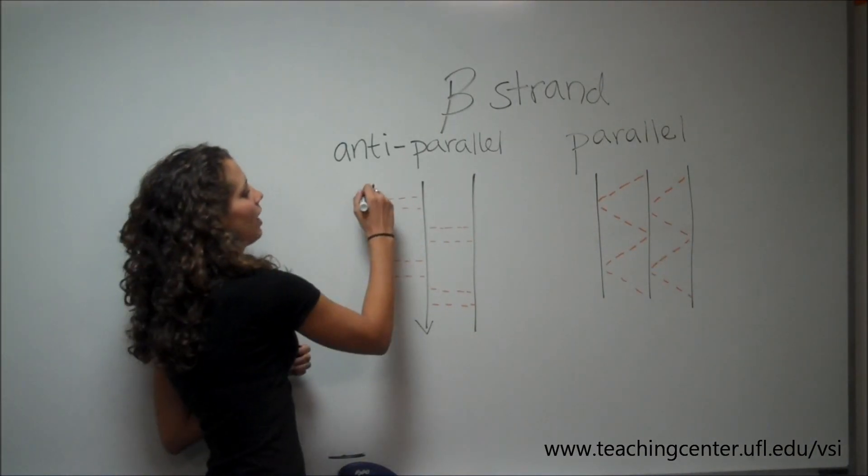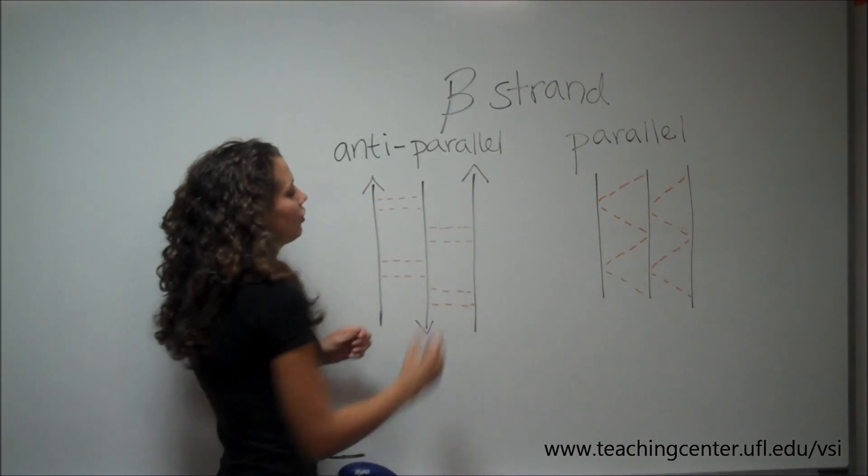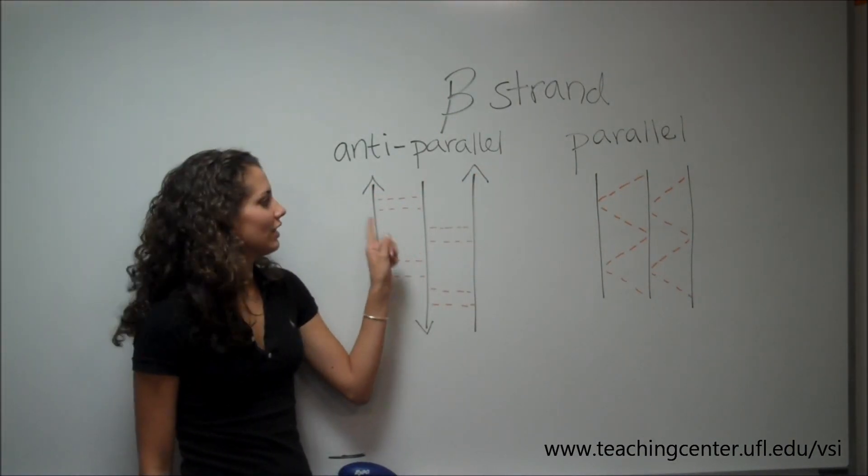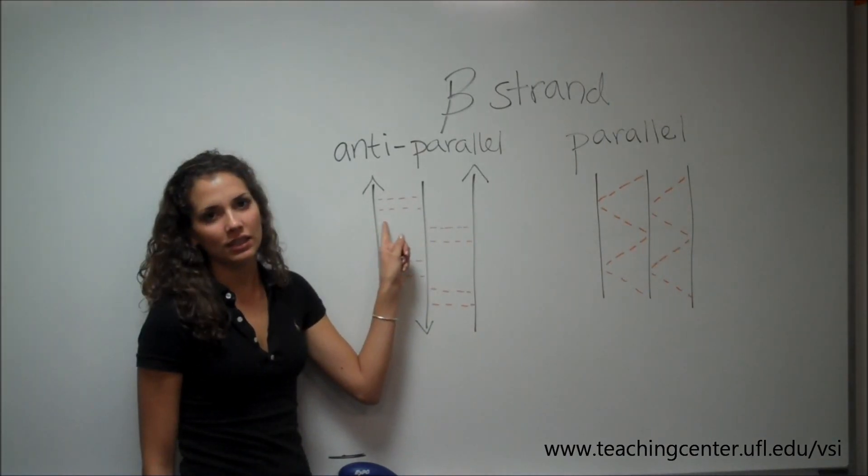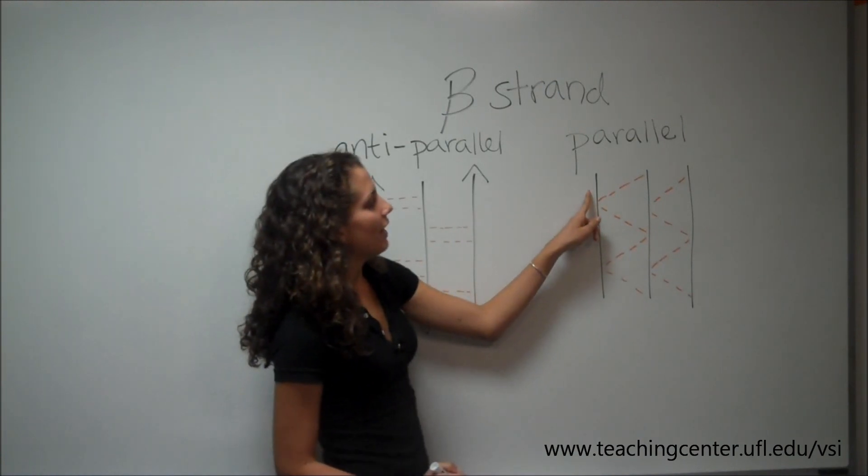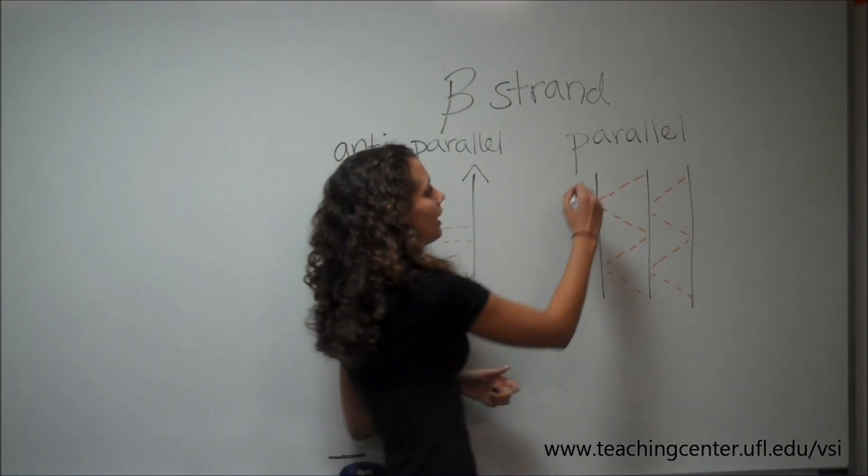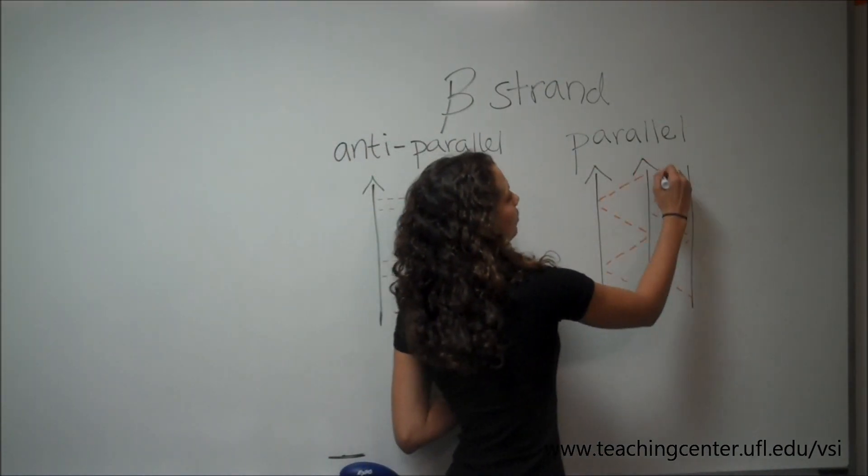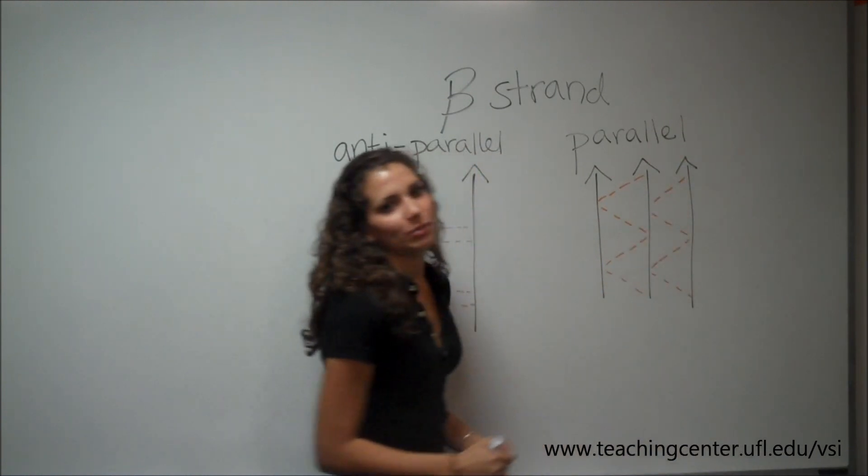With anti-parallel, the strands run in opposite directions, and the hydrogen bonds are straight. Because there is less distance for each hydrogen bond, this is a stronger conformation than the parallel beta strands, where each strand runs in the same direction, and the hydrogen bonds are diagonal.